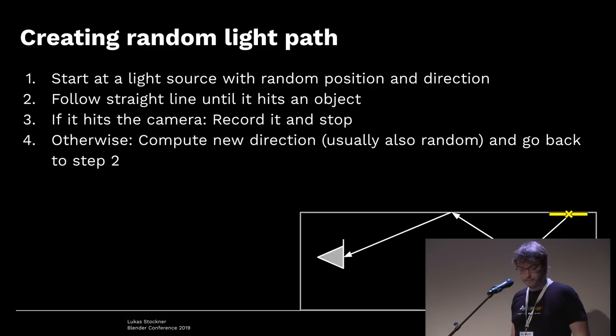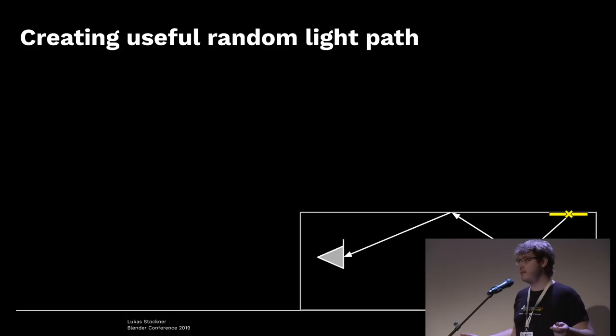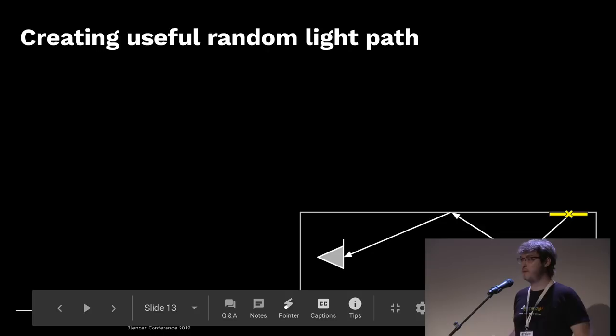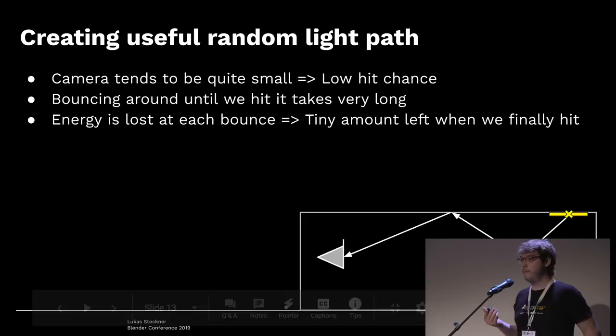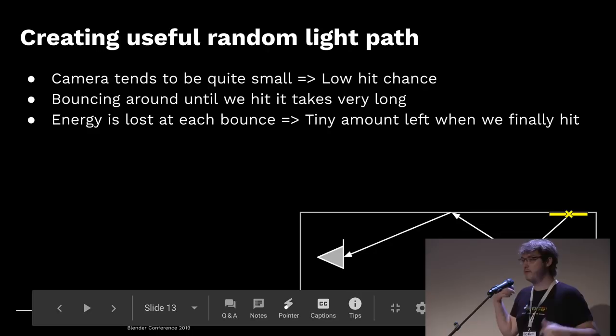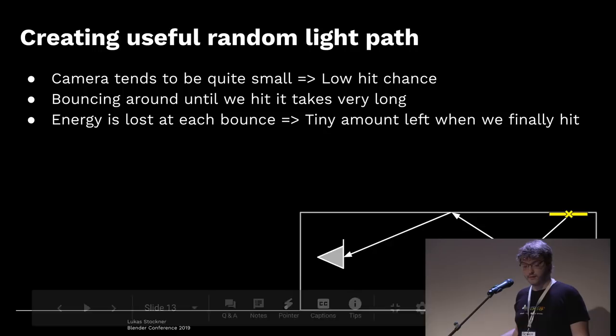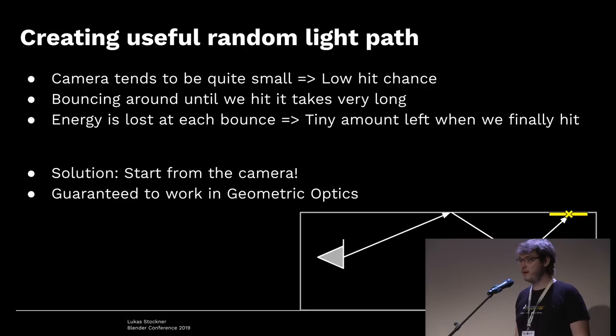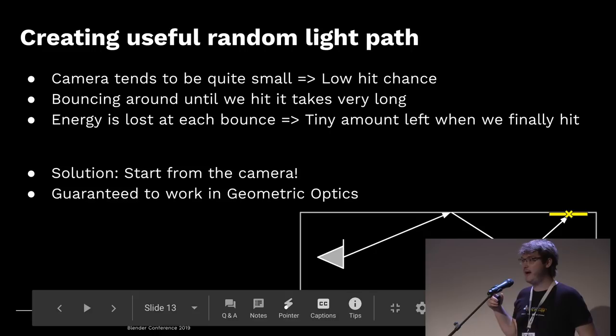In practice, starting from the light source won't work well because the camera sensor is very small. The path will bounce a lot before hitting it, and at every bounce the path loses energy. The solution is pretty simple: we reverse everything. In geometric optics, paths are reversible, so we can imagine the camera emitting something and eventually hitting the light. That way it's guaranteed that every ray is connected to the camera somehow.